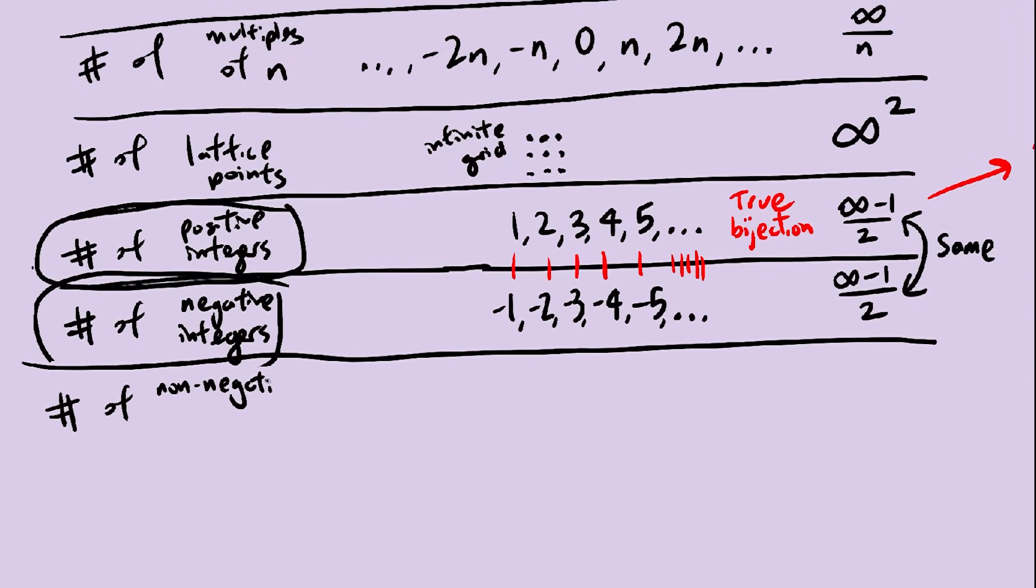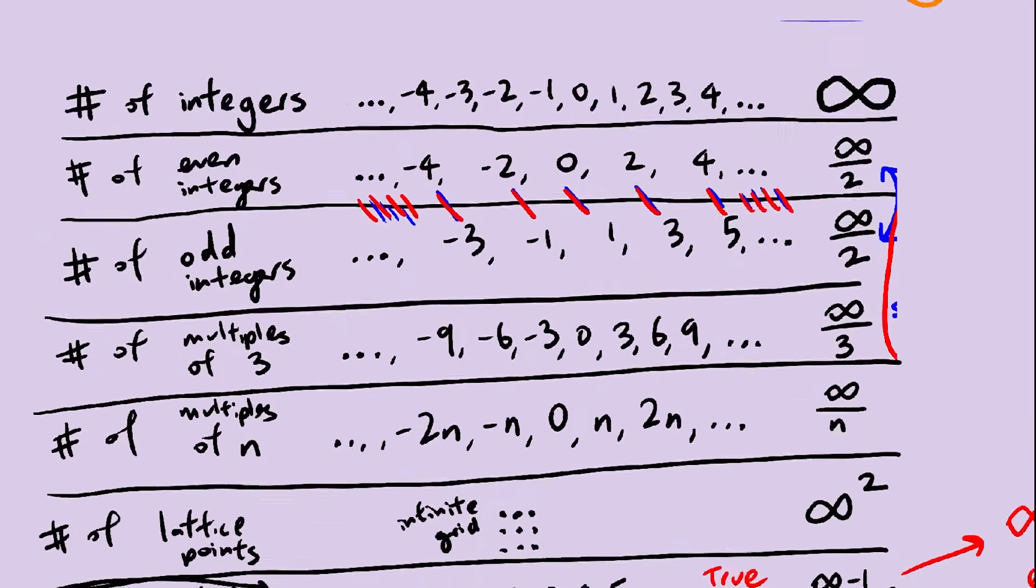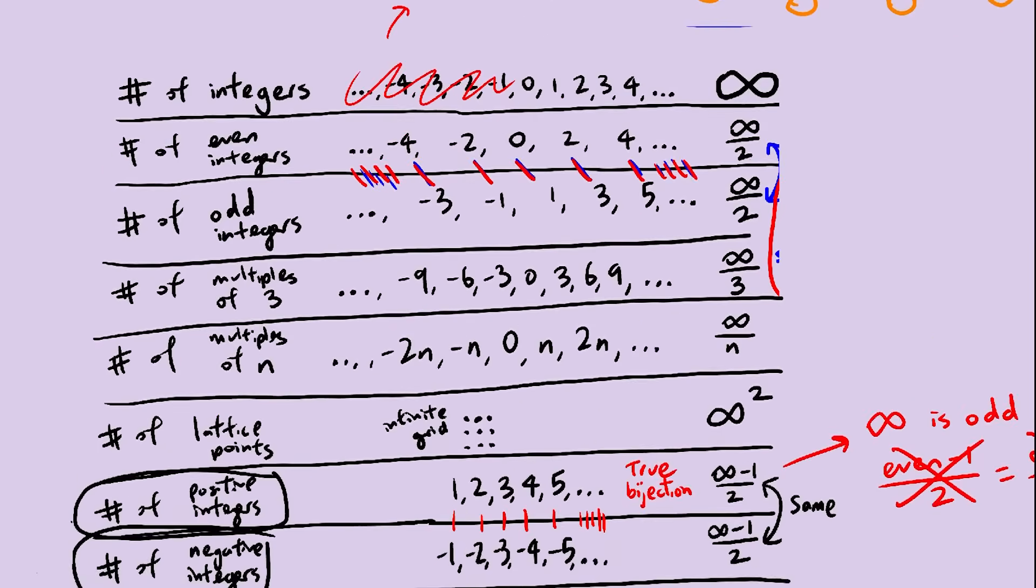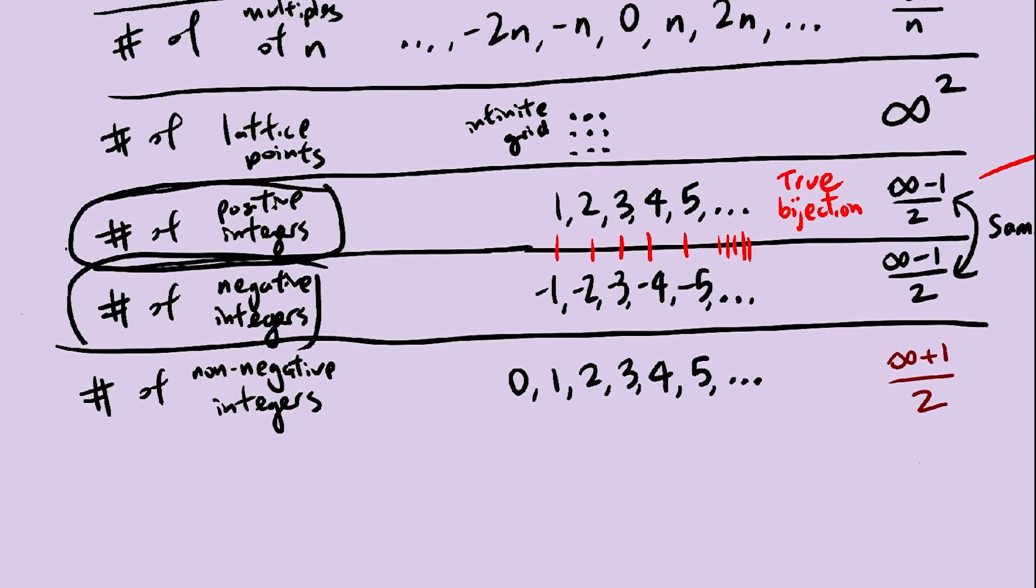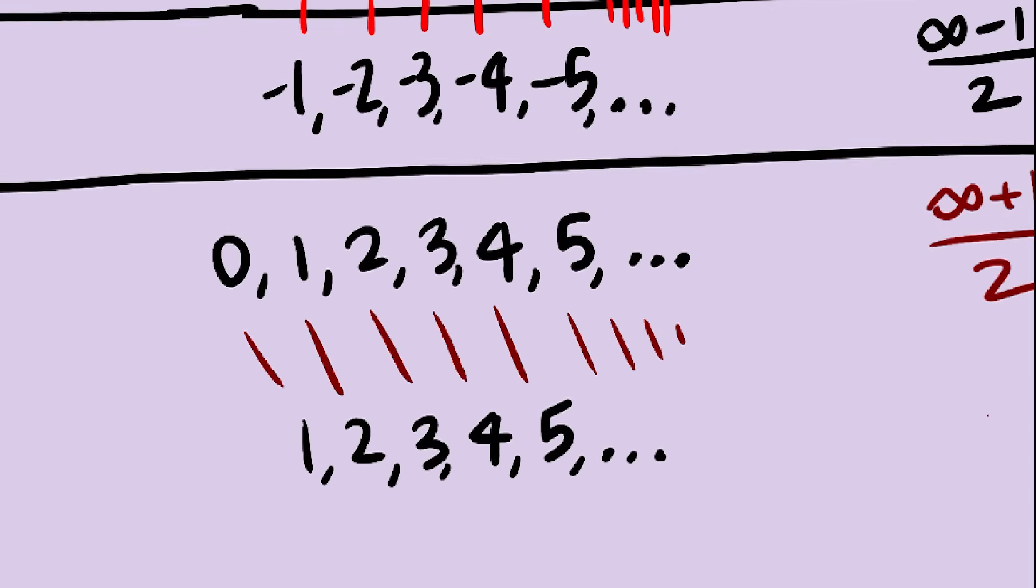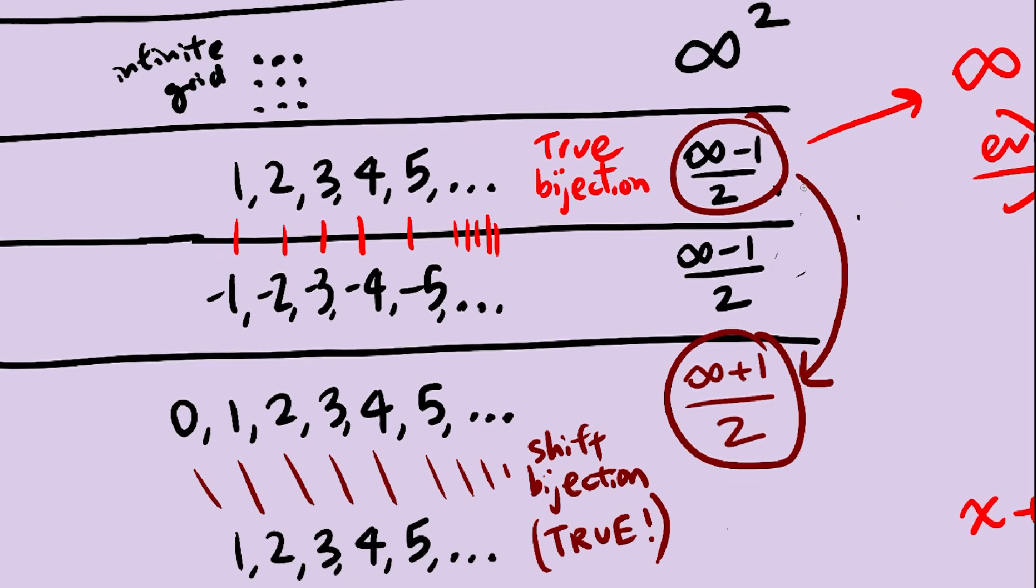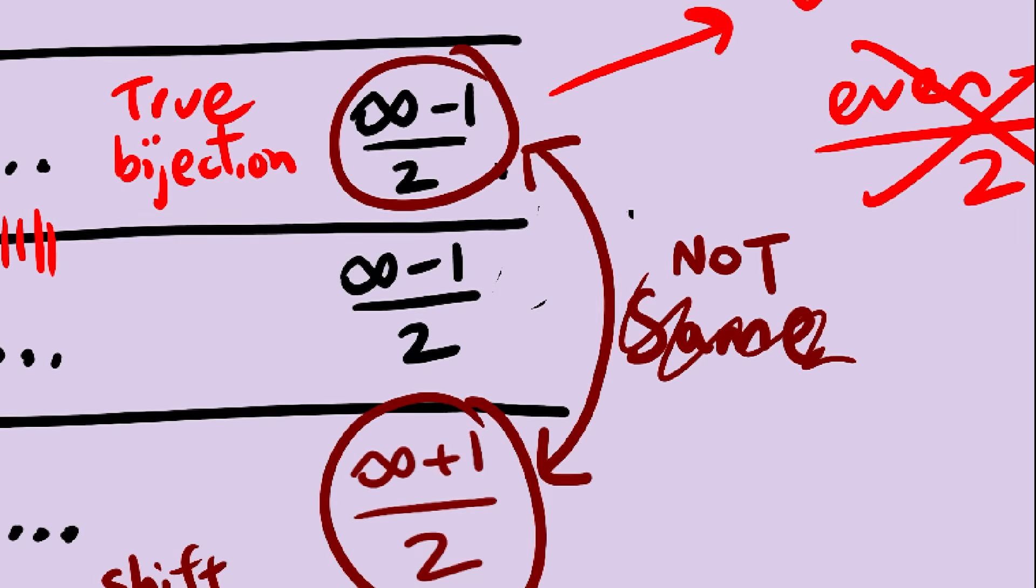Now, how many non-negative integers are there? We can just add 1 to the positive integer count, or we could subtract the negative integer count from infinity. Both give us the same answer. Wow, everything is going wonderfully. And look at that. There's even a third way to find the amount of non-negative integers. We can just do a simple shift bijection, which is a true bijection, so now we know there are the same amount of positive integers as non-negative integers. We have another paradox.